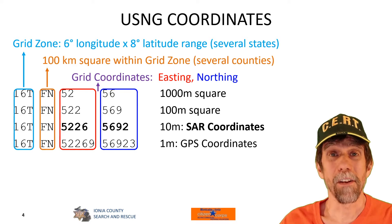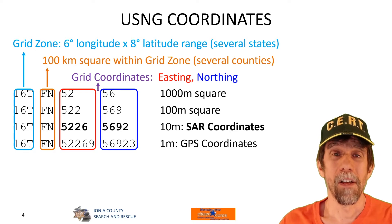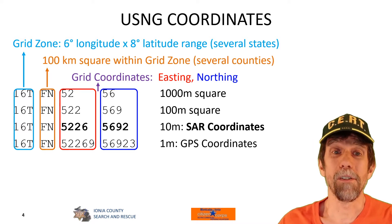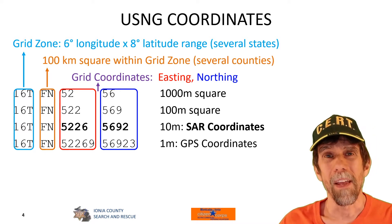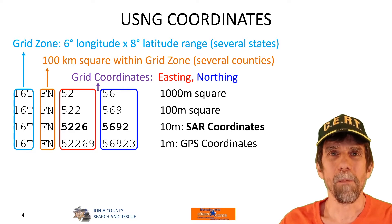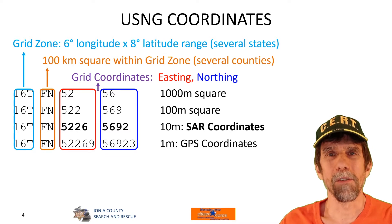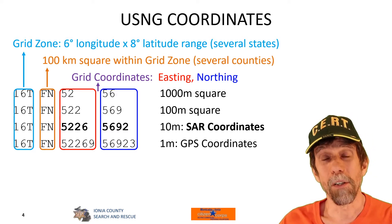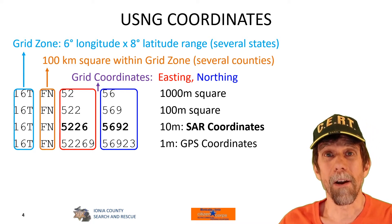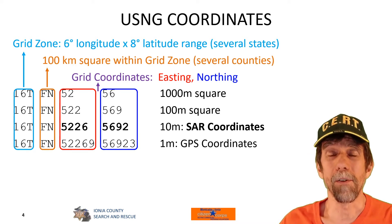In search and rescue we use the US National Grid coordinate system, and a USNG coordinate is comprised of several parts. The first part is a grid zone, which refers to a six-degree longitude by eight-degree latitude range. In most parts of the US that represents a region of several states, just to give you an idea of about how big that is. Within that grid zone it's divided up into 100-kilometer squares — 100 kilometers by 100 kilometers — and there are a bunch of those within each grid zone, identified by a pair of letters. A 100-kilometer square typically covers several counties.